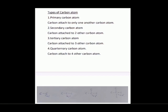Next topic is types of carbon atoms. Carbon atoms can be primary, secondary, tertiary, or quaternary. What is a primary carbon atom? A carbon atom attached to one other carbon atom is called a primary carbon atom.